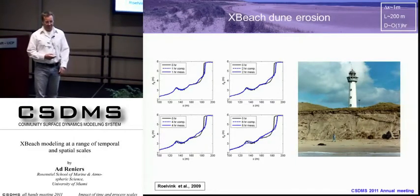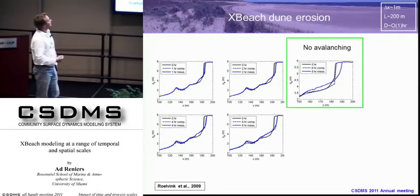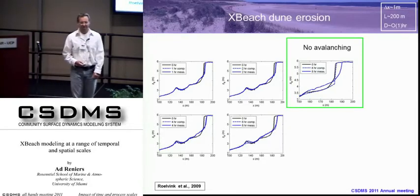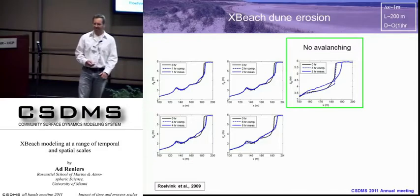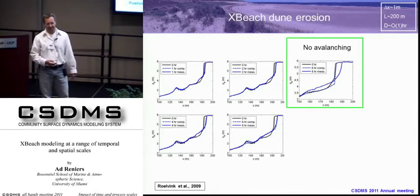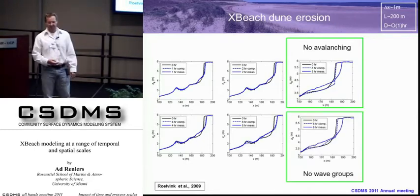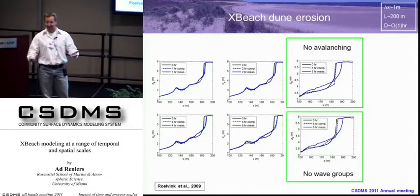It doesn't do such a good job at the bar that's developing in reality — the model is not capable of doing that. Also, if you exclude avalanching, it does a crappy job — it doesn't do a good job in predicting dune erosion if you do not include avalanching. If you leave out the wave groups, it's equally bad. So apparently these two mechanisms are important.